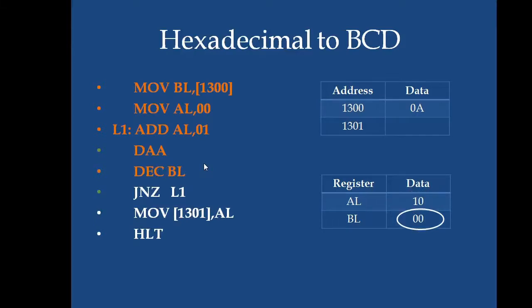Next, decrement BL. BL value is decremented to 0. Now, in the next instruction, jump on not zero to L1. BL is checked for 0. Since it is 0, it comes to the next instruction which is moving the contents of AL to the target address. The 10 is copied to 1301 output address. The equivalent is obtained then the program is executed successfully.